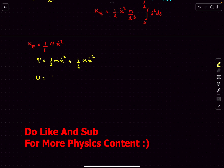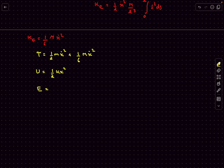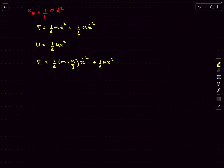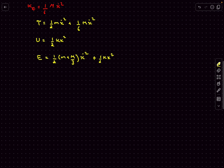The potential energy of the system is the energy stored in the spring, which is ½kx². So the total energy of the system is ½(m + M/3)ẋ² + ½kx². If we differentiate the total energy with respect to time it should come out to zero, since there are no damping agents or friction present.